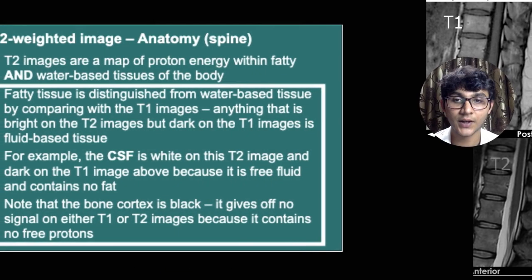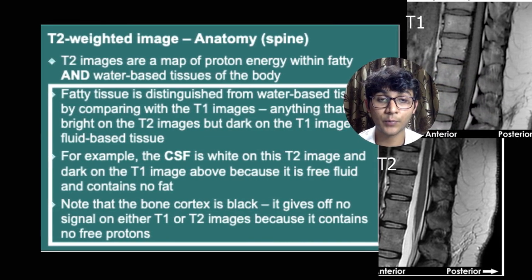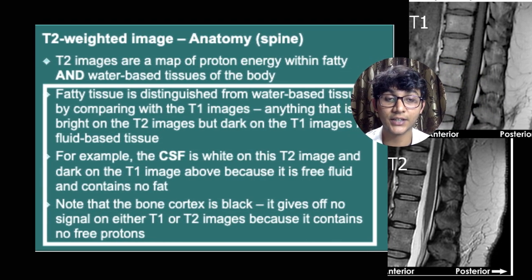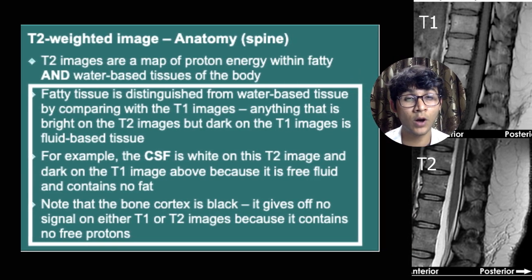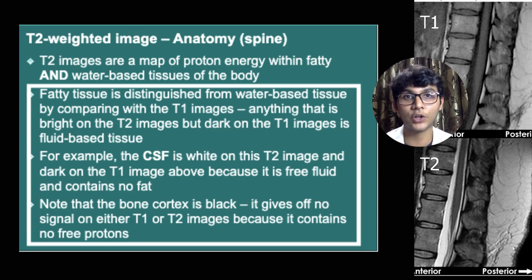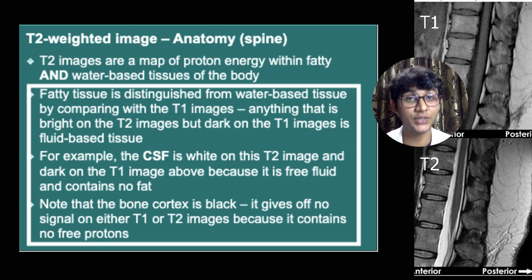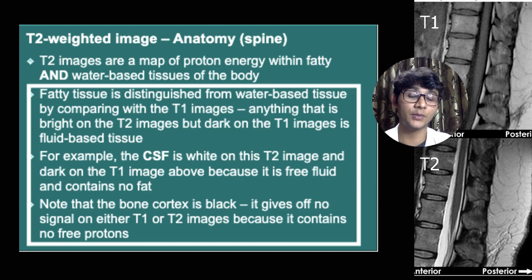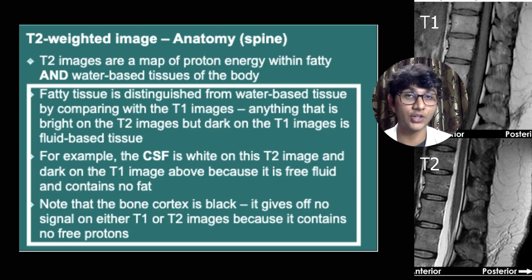Fat tissue is appreciable on both T1 and T2. However, watery substances — such as CSF, inflammation, vasogenic edema, and infarction-related edema — appear much brighter on the T2 scan. That's why we often compare T1 and T2 to differentiate between inflammatory or watery pathologies.